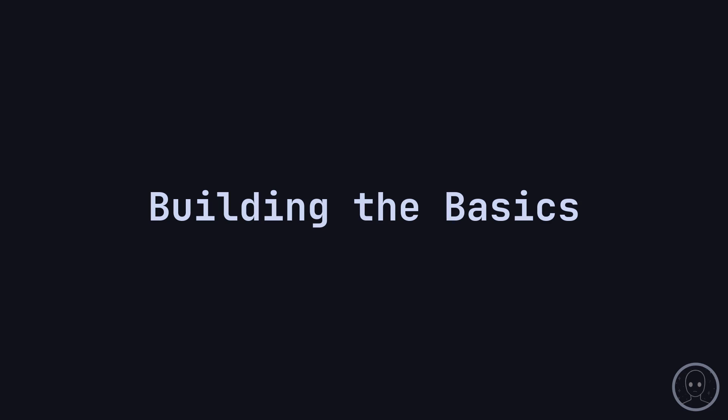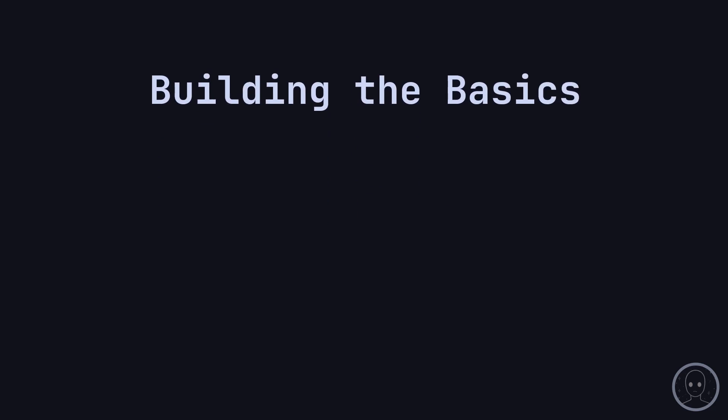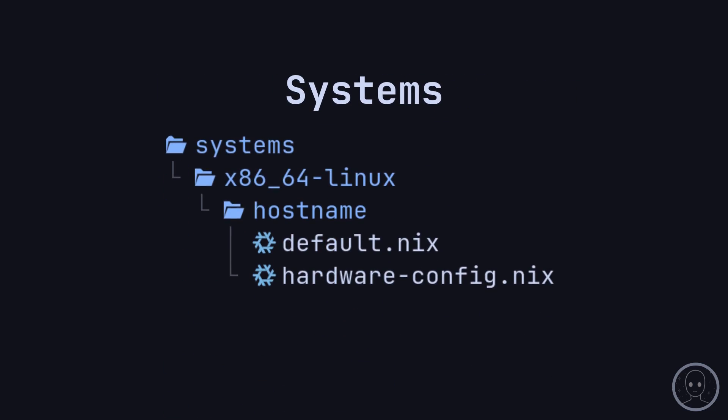Snowfall uses directories to declare modules, systems, library functions, packages, etc. Let's create a system. You need to create a structure that looks like this. The directory names define the architecture and host name. Keep in mind that these work with Darwin systems as well.